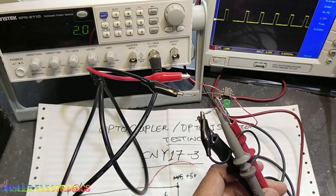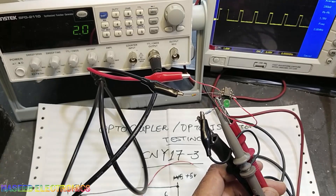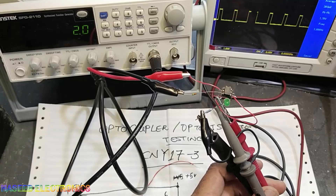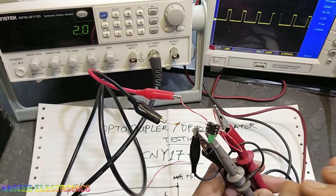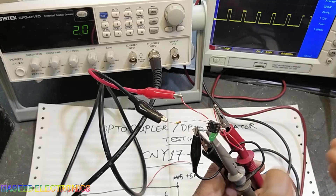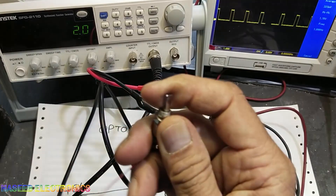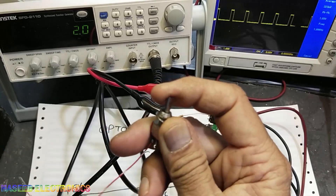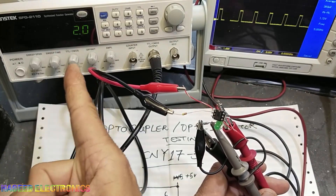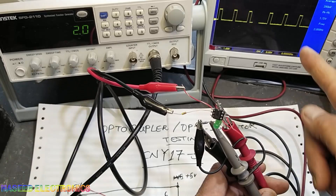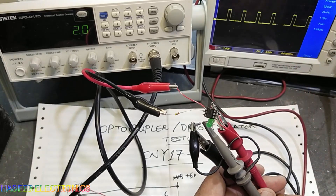Assalamualaikum warahmatullahi wabarakatuh. Welcome back to my channel. In this session we are going to design a tester for the CNY17 optocoupler opto-isolator. We can test it manually using a push button, and we can also test it by applying a signal and taking the output on the oscilloscope.